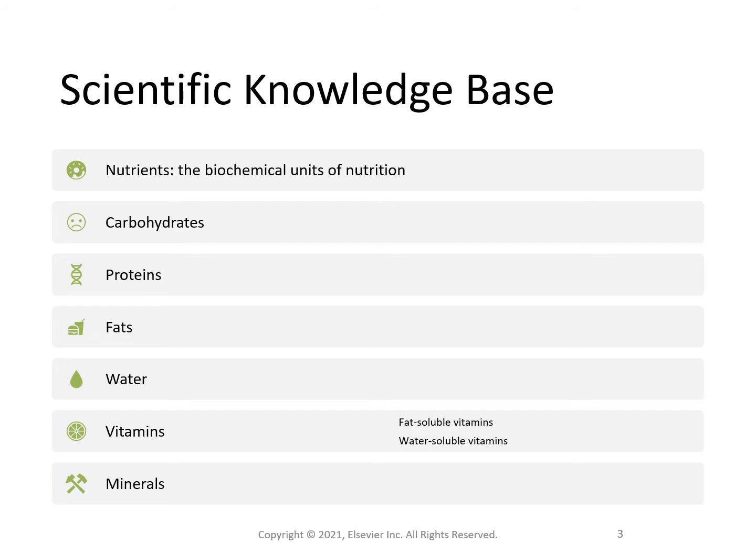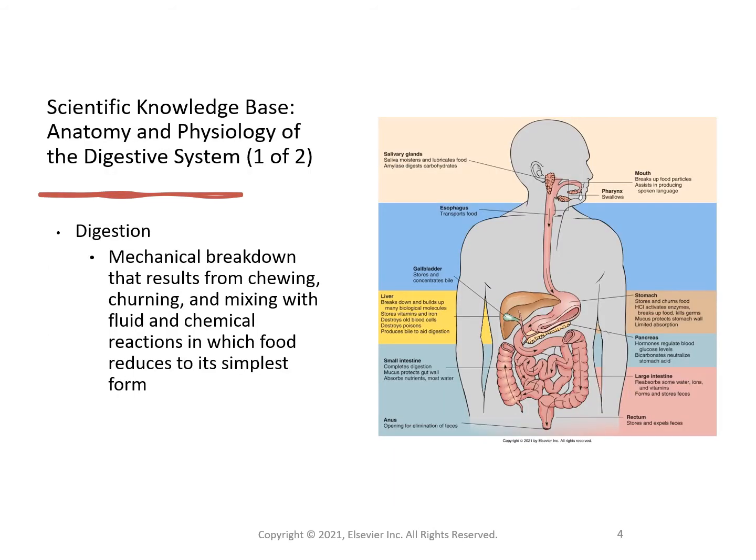Review your textbook's section on scientific knowledge base to understand the basics of nutrition. You've all had a nutrition class for nursing school, but just to review: this figure in your book is a summary of the digestive system — anatomy, organ function, hydrochloric acid, and how food goes through your digestive system. Digestion is the mechanical breakdown that results from chewing, churning, mixing with fluid, and chemical reactions, reducing food to its simplest form. Enzymes are protein-like substances that act as catalysts to speed up chemical reactions and are essential to digestion.